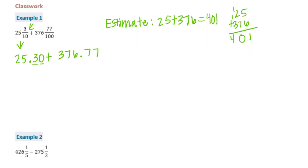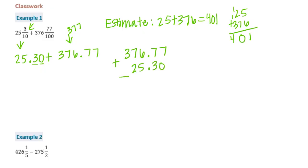You also could have rounded — some people saw that that was 77 hundredths and might have rounded up to 377. You can do that too. But it's an estimate, so no estimate is perfect. Now I'm just going to add them and my answer should be around 401. I'll put the bigger number on top: 376 and 77 hundredths plus 25 and 30 hundredths. Remember, the decimal point must line up and then you bring it straight down when you're adding or subtracting.